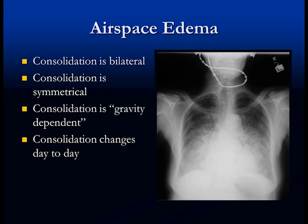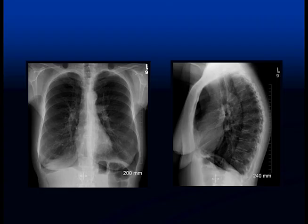In airspace edema, the consolidation is bilateral, symmetrical, and gravity dependent. If you're looking at serial x-rays from one hour to the next, consolidation due to edema is going to change — it changes depending on the patient's position and degree of fluid overload. If you have consolidation that is changing from hour to hour, this is pulmonary edema.